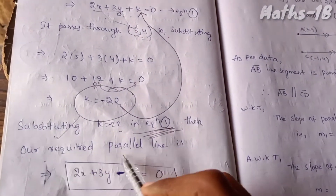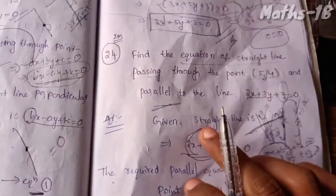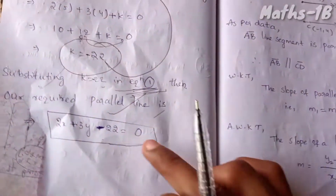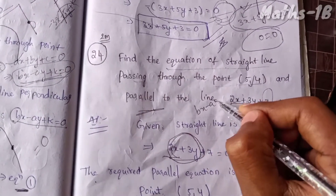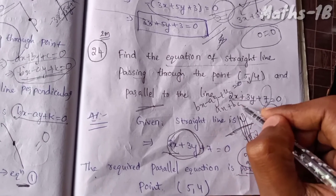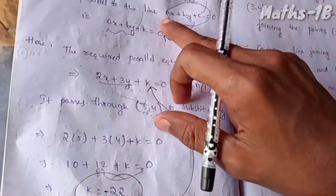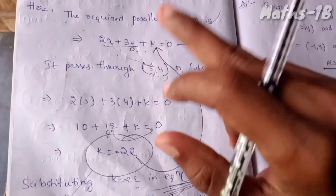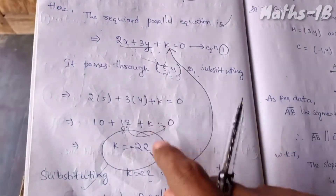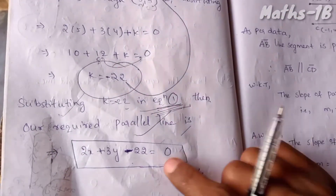We get the required parallel line equation: 2x plus 3y minus 22 is equal to 0. For a parallel line, use ax plus by plus k equals 0; for a perpendicular line, use bx minus ay plus k equals 0. Substitute the given point to find k, then substitute back to get the final equation.